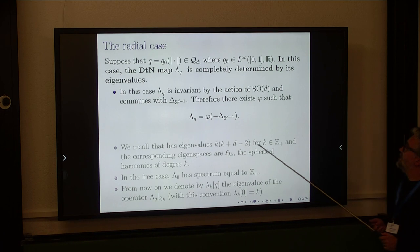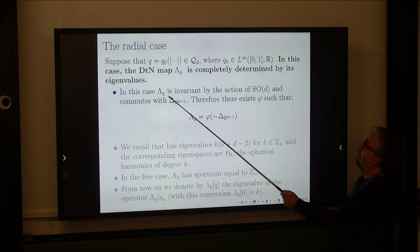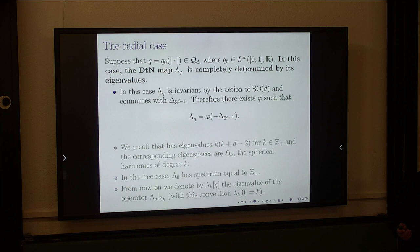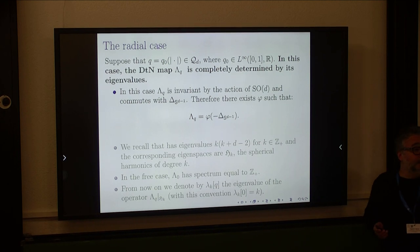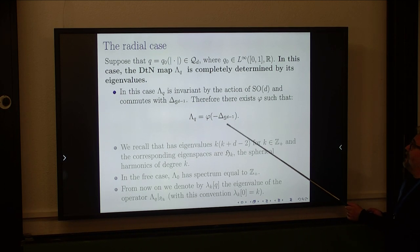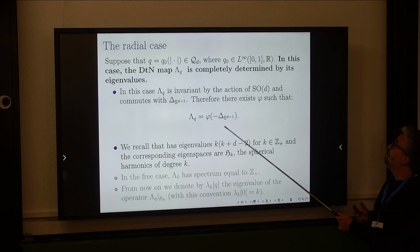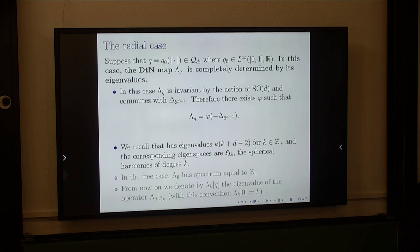This case is nice because the Laplacian commutes with the isometries of the sphere, so the Dirichlet-to-Neumann map also commutes with rotations. An operator that commutes with all rotations is simply a function of the Laplacian on the sphere — a Fourier multiplier on the sphere. The eigenfunctions are the same as those of the Laplacian on the sphere; only the eigenvalues differ. So once you know the spectrum of the Dirichlet-to-Neumann map, you know the operator completely. This is a huge simplification: to characterize the manifold of Dirichlet-to-Neumann maps, it suffices to characterize the spectra.